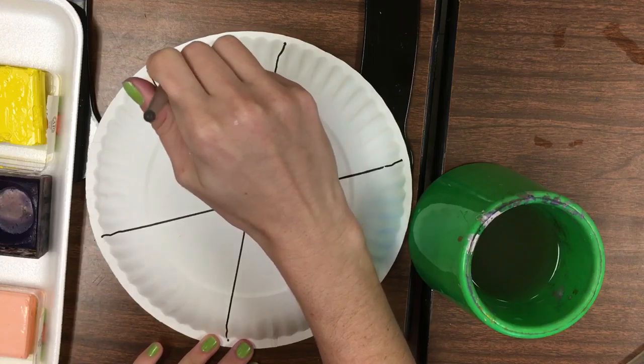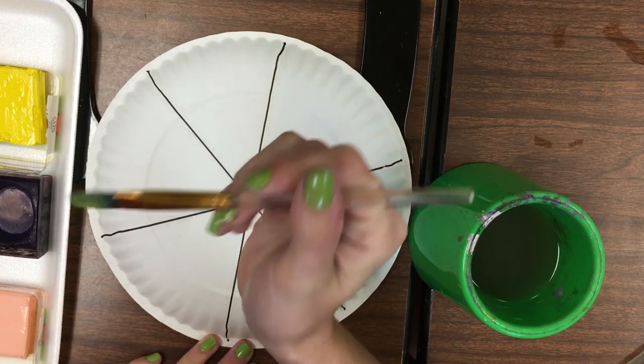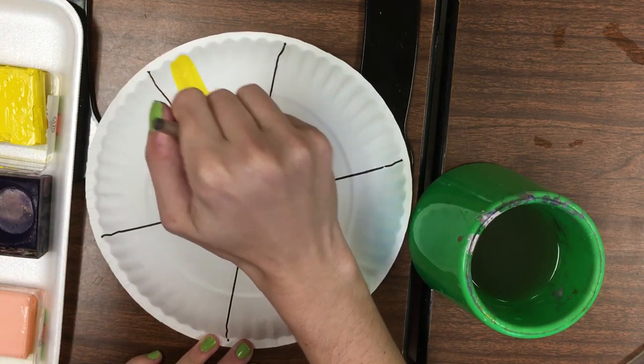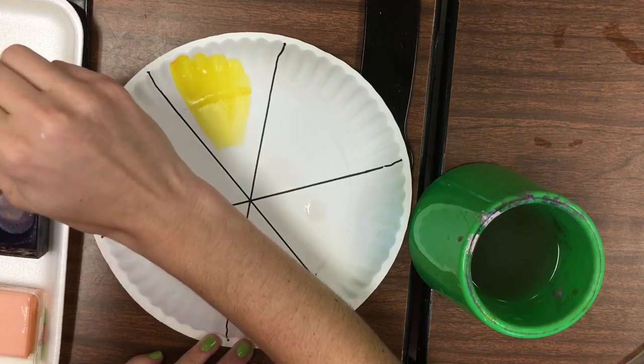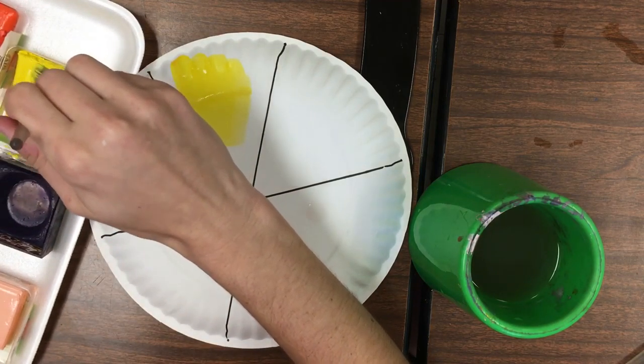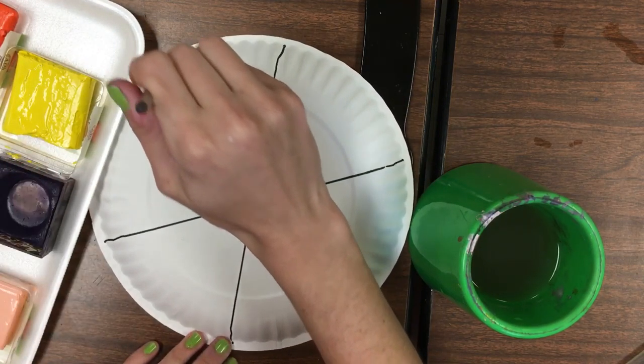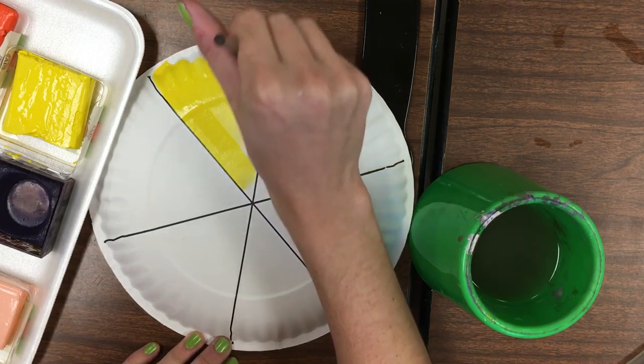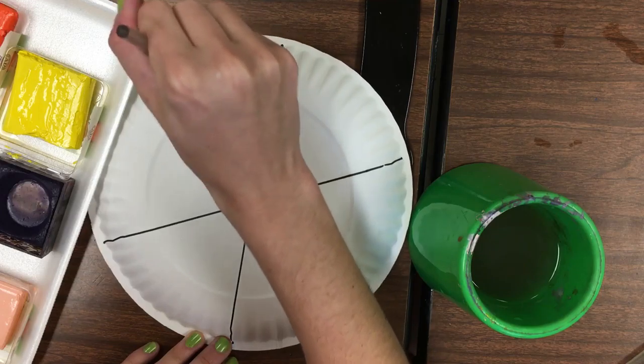If I were to use a small brush, it would take forever to cover this huge area. So all you do to paint is dip your paintbrush in the water, get a little water on your brush, then go to the paints, rub the paints a little bit, and you'll have plenty of paint on your brush. Paint in the first triangle on yours.